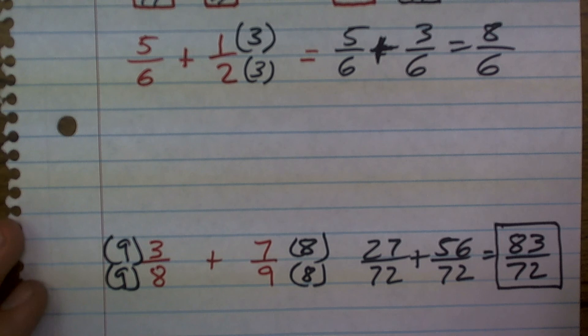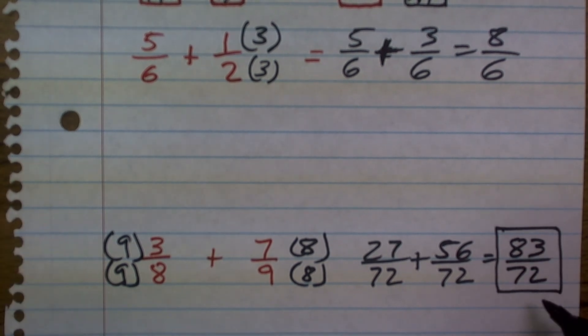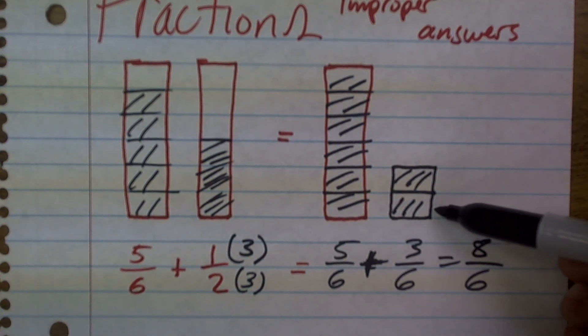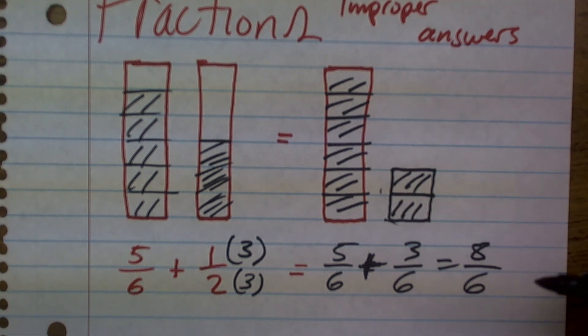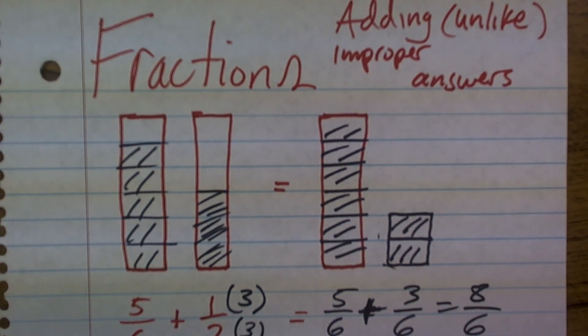And what you'll notice, again, is we're going to have more parts than in the whole. But that's okay. It just means it's going to be an improper fraction, meaning that we're going to have more parts than our whole can create. And that's about it for adding fractions with unlike denominators and getting improper answers.